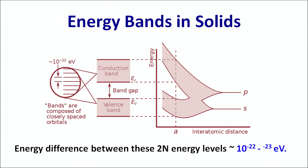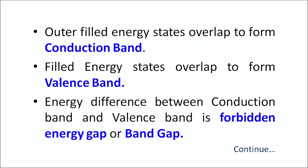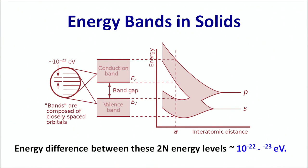As these atomic orbitals come closer, they overlap within themselves and form the band structure. Two distinct band structures are formed. The orbitals which are unfilled form the conduction band and the orbitals which are filled form the valence band. Thus in a given solid, what we observe is the formation of these two bands — the conduction band and the valence band. The energy difference between the conduction band and the valence band is known as the forbidden energy gap or the band gap, and it is this band gap which decides the conductivity of a given material.